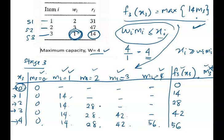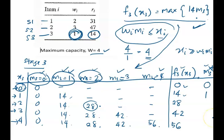For the optimal M3 column, we record which M3 value produced the optimal solution. The value 0 comes from M3 equals 0. The value 14 comes from M3 equals 1. The value 28 comes from M3 equals 2. The value 42 comes from M3 equals 3. And finally, 56 comes from M3 equals 4.